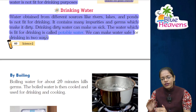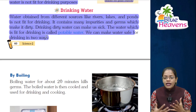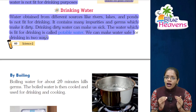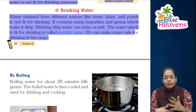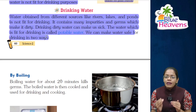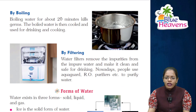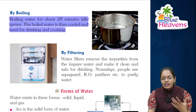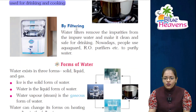The water we get from different sources — rivers, lakes, ponds — is not fit for drinking because it has impurities, germs, and bacteria that make it dirty. If we drink dirty water we will fall sick. Water that is completely fit for drinking is called potable water. The first way to make water safe is by boiling. Boiling water for about 20 minutes kills germs. The boiled water is then cooled and used for drinking and cooking.